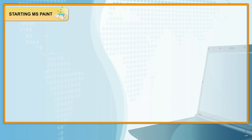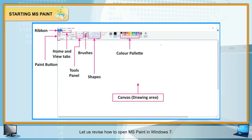Starting MS Paint: Let us revise how to open MS Paint in Windows 7. The Paint window will appear as shown here.